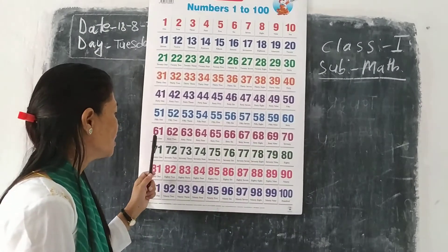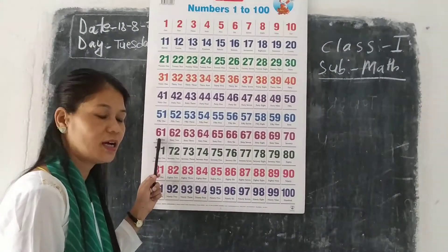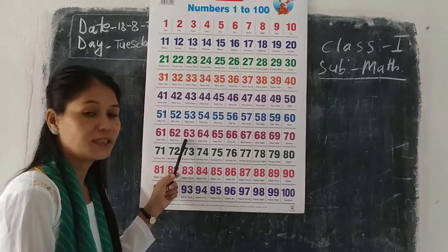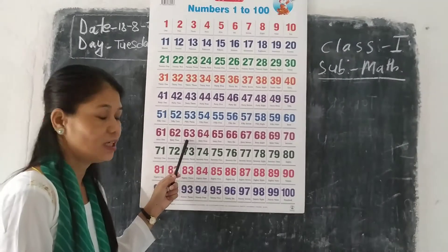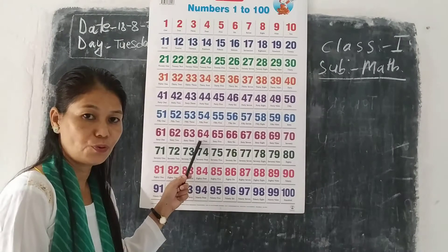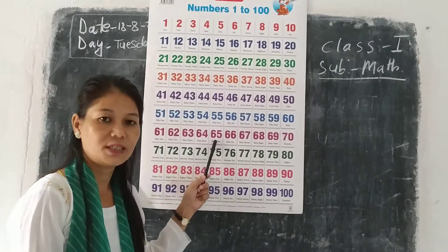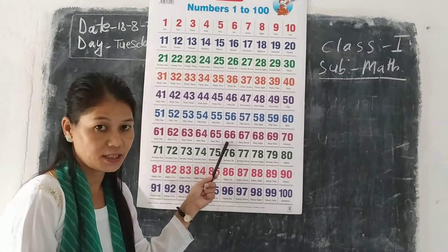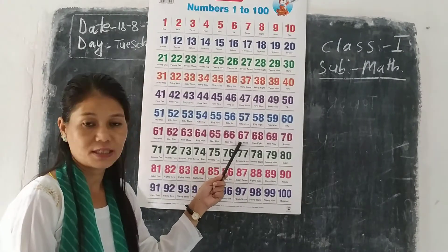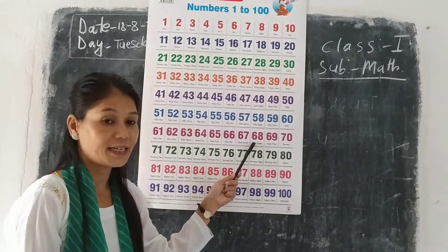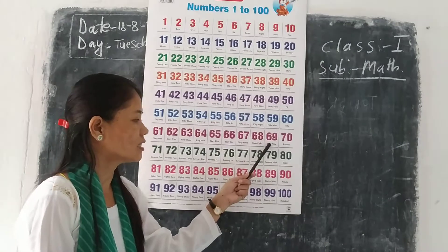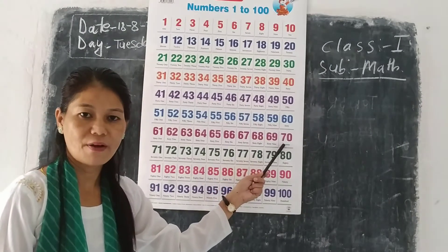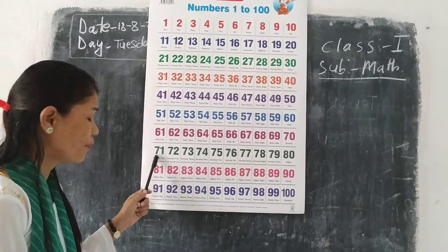Next: 61, 62, 63, 64, 65, 66, 67, 68, 69, 70.